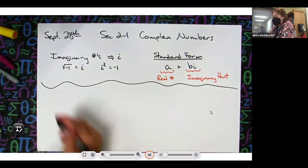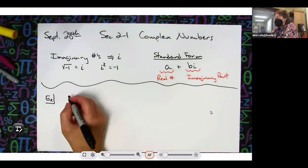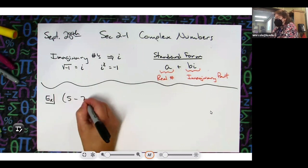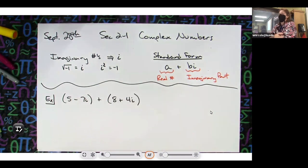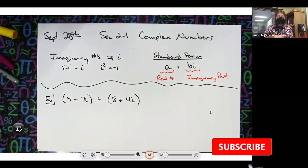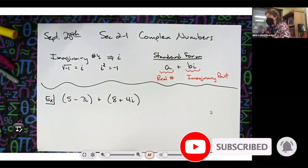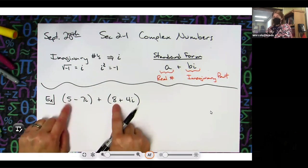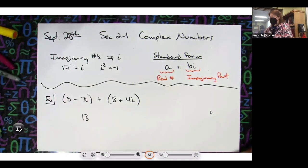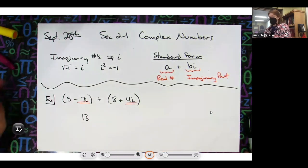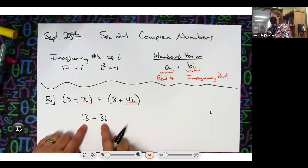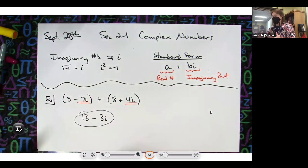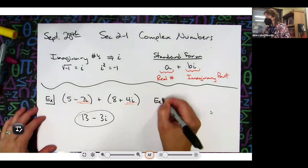Now we're going to start with basic arithmetic — can we add, subtract, and multiply these types of numbers? If I had something like five minus seven i, written kind of like a binomial, and we're going to add to that eight plus four i. It's nothing more than adding and subtracting like terms. Put the real numbers together: five and eight give you 13. Put the imaginary numbers together: negative seven and four give you negative three, so minus three i. Check if it's in standard form — it is, so you're done: 13 minus 3i.